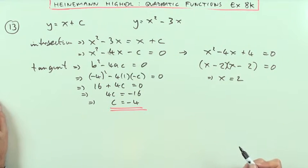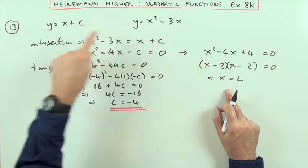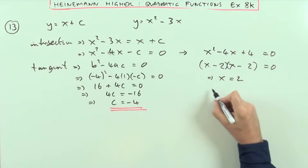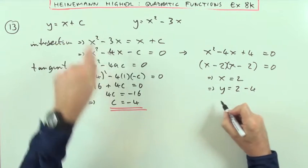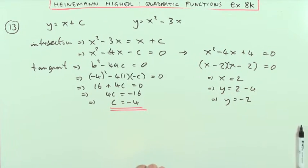It'd have to be a squared bracket and if x is 2 I can put that back into either this one or that one to find the original one. I think I'll put it back into this which means that y is going to be 2 take away 4 which means y is equal to negative 2.